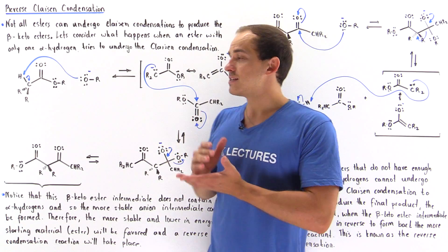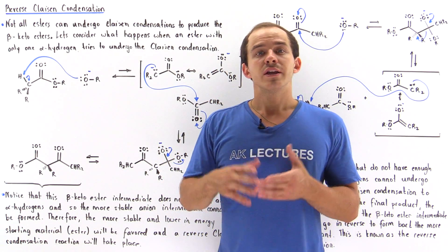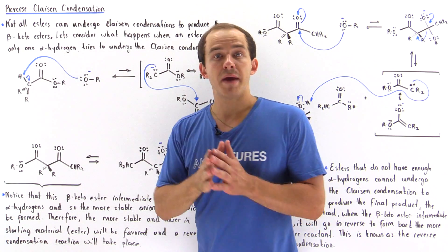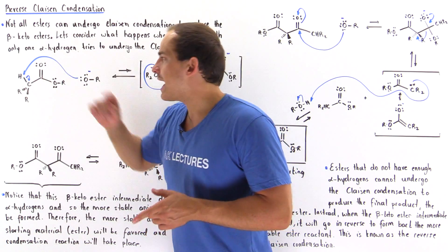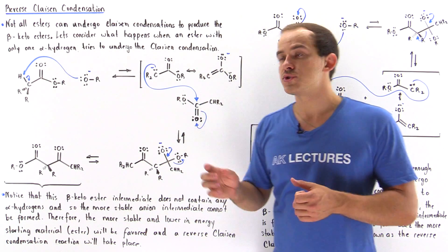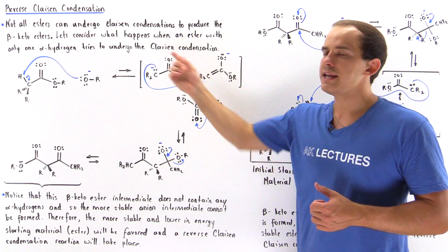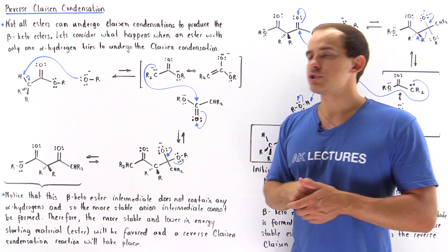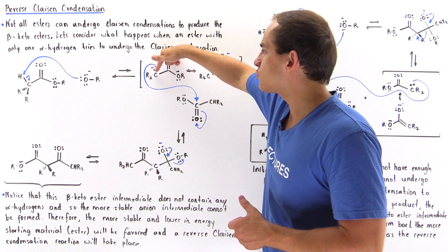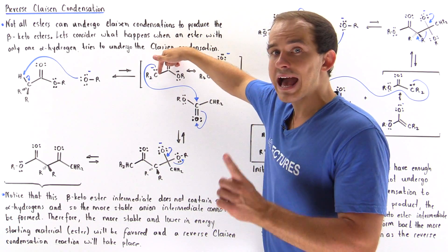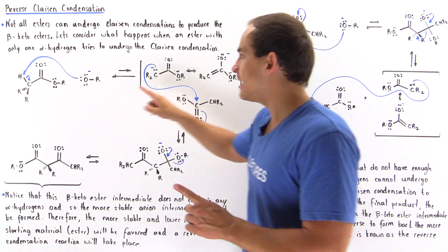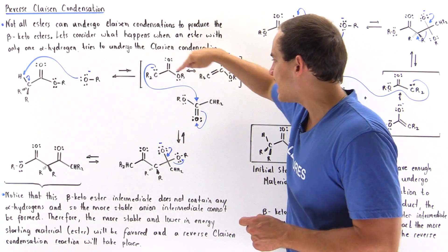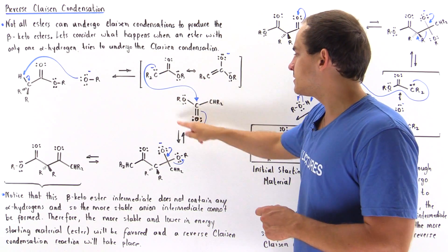Let's suppose this ester molecule tries to undergo the Claisen condensation. In step one, we have the alkoxide base that deprotonates the alpha hydrogen off of our ester to produce the ester enolate molecule that is resonance stabilized. In the second step, we have the addition reaction taking place in which the two electrons on the alpha carbon act as our nucleophile, attacking our second ester molecule and forming a bond between the alpha carbon of one ester and the carbonyl carbon of the second ester.